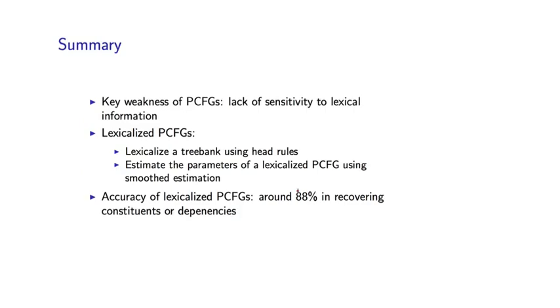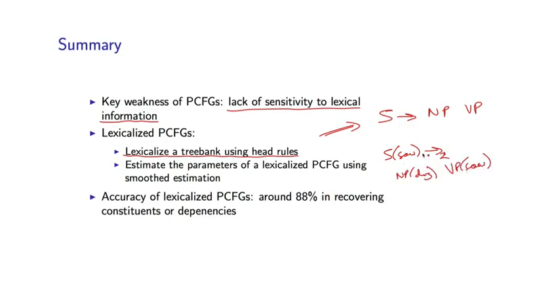So, to summarize, we saw that a key weakness of PCFGs was the lack of sensitivity to lexical information. And in this lecture, I've described lexicalized PCFGs as one way of getting around this problem. Some key steps were, firstly, to lexicalize a tree bank using head rules. This allowed us to go from rules like S goes to NP VP to these lexicalized rules like S saw goes to NP dog VP saw. So we used this trick to vastly increase the number of non-terminals and also the number of rules in our grammar.